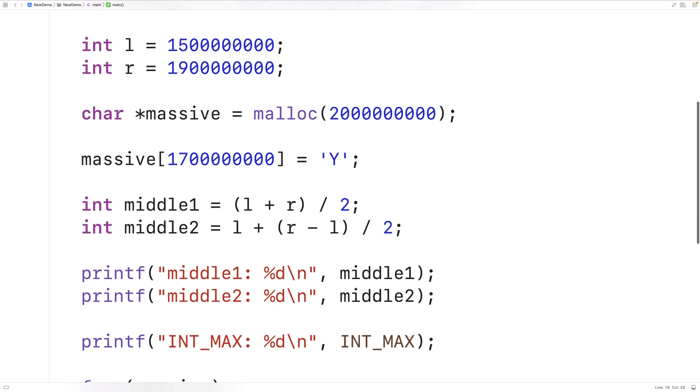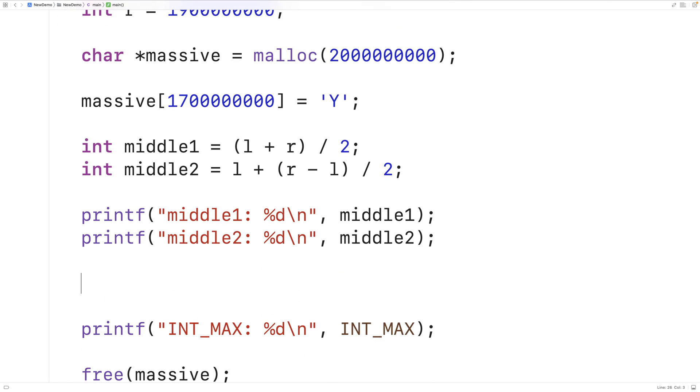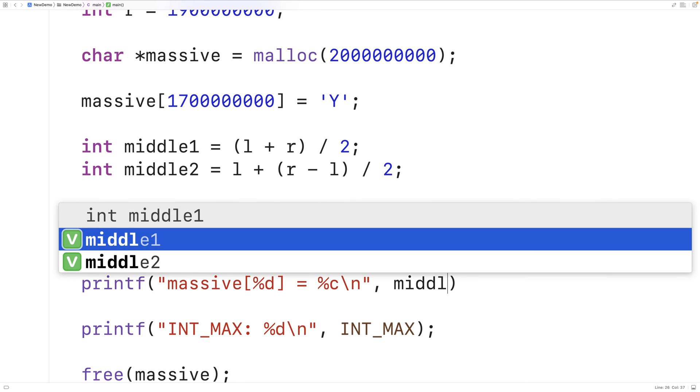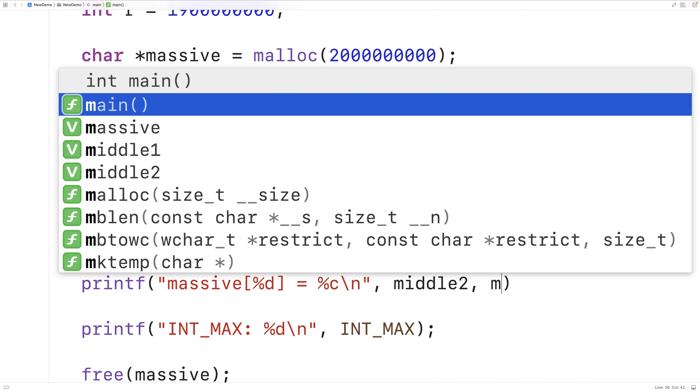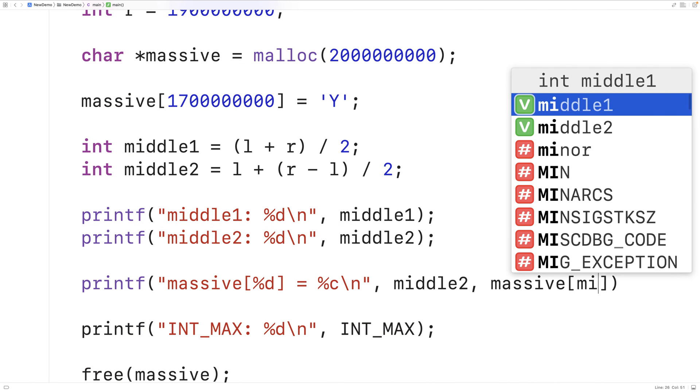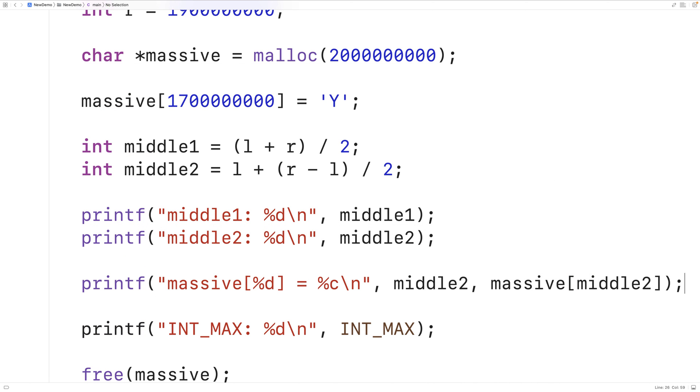So down here, we'll also print out the value in the massive array at that index middle2. So we'll have percent D and percent C and we'll put middle2 for the index and massive at middle2 for the value. And we can save compile and run our program.